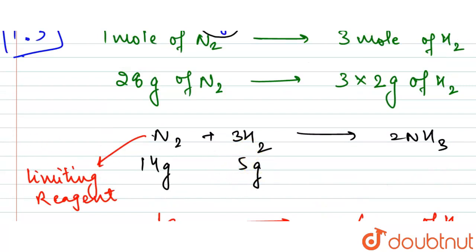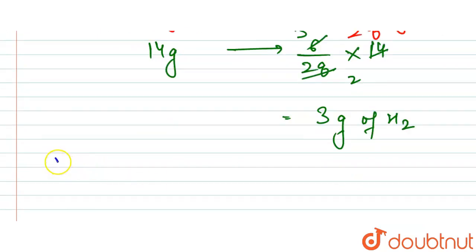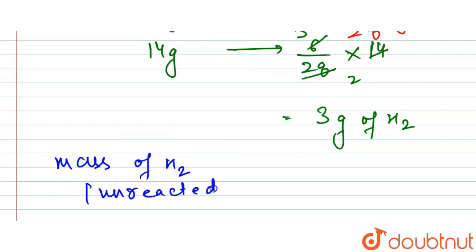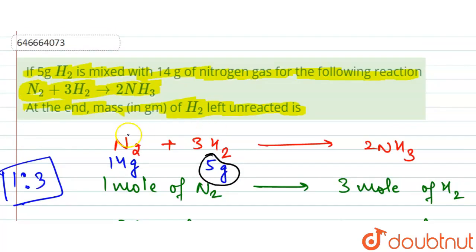This means 14 grams of N₂ requires only 3 grams of H₂, confirming H₂ is present in excess. The mass of H₂ left unreacted = 5 grams − 3 grams = 2 grams. So the answer is 2 grams. Thank you.